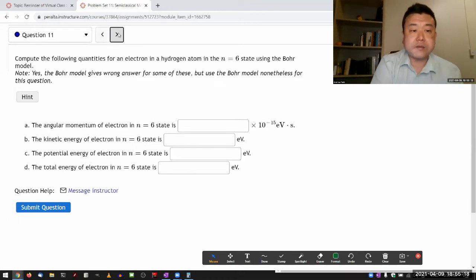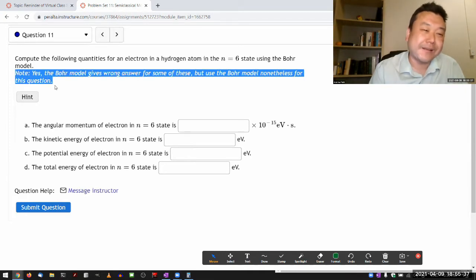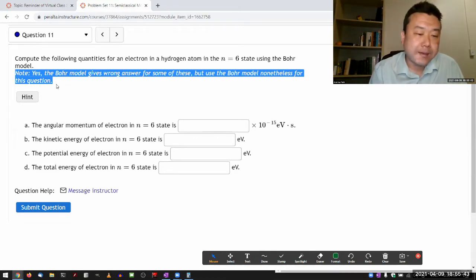Question 11 is more interesting in connecting to how the predictions that the Bohr model makes for some of the quantities, especially since this question says to use the Bohr model even when it gives the wrong answer. Let me work through that and I will tell you in what ways the Bohr model answer is wrong.